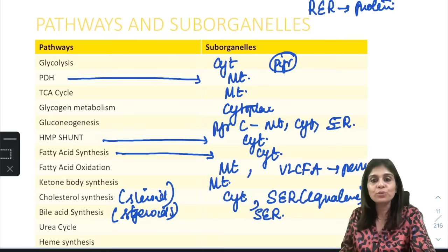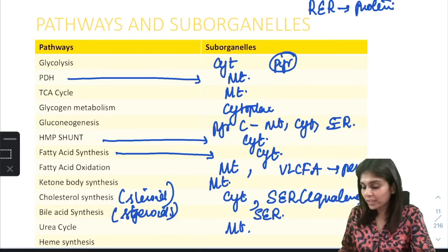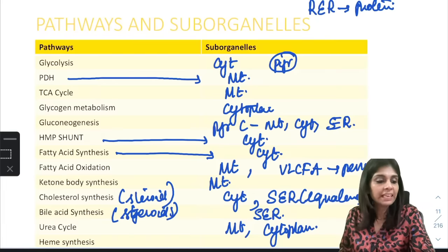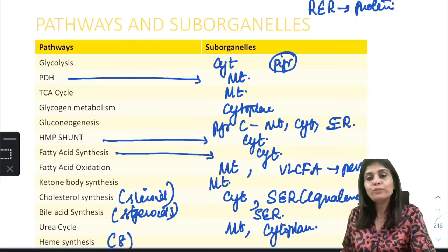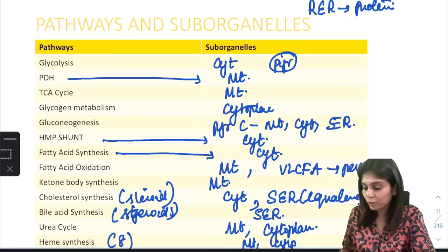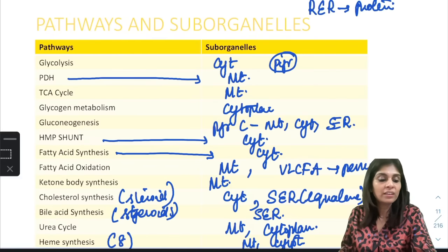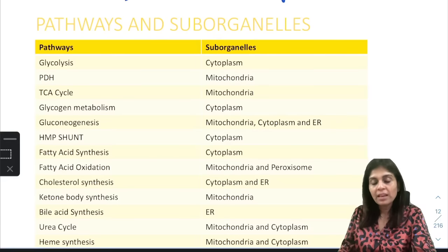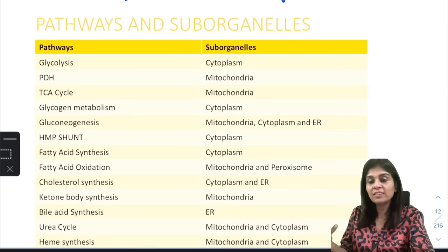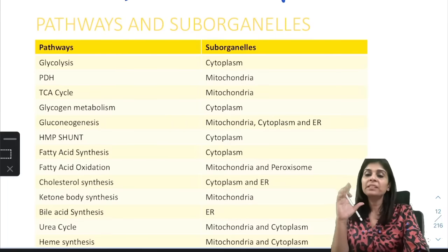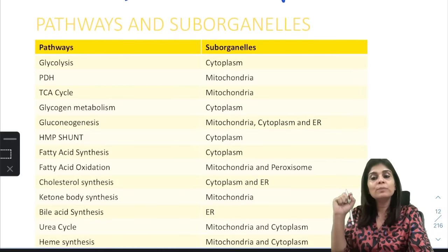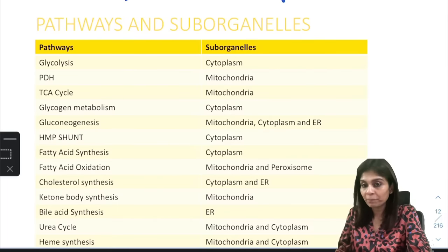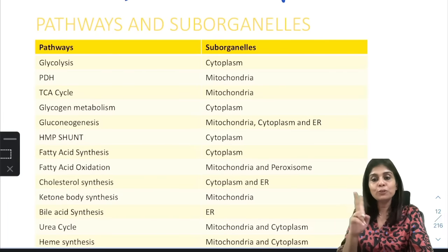Urea cycle: two steps happen in mitochondria, remaining steps in cytoplasm. Heme synthesis has eight steps: four happen in mitochondria and four in cytoplasm. Key summary: most oxidation processes happen in mitochondria; glycolysis is the only oxidation in cytoplasm; gluconeogenesis involves multiple sub-organelles; smooth ER is related to steroid synthesis — so both cholesterol and bile acid synthesis involve smooth ER. Heme synthesis and urea cycle both involve mitochondria and cytoplasm.